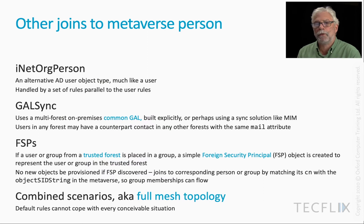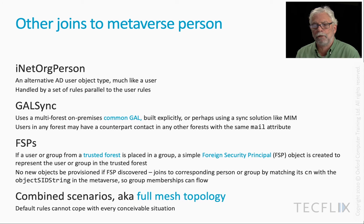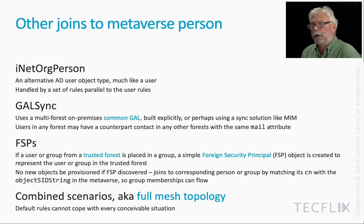It's also possible to have combined scenarios. When there are combined scenarios, it's often referred to as a full mesh topology. Any time you've got something more complicated than what's been described, where scenarios are combined, the default rules may not be able to cope. They're very good, but they can't possibly be designed for every conceivable situation. Once you start to move to a full mesh topology and combined scenarios, it's possible they'll still work, but you may have to get involved.